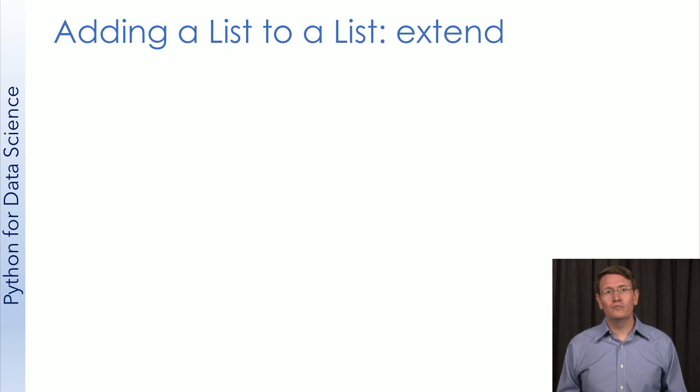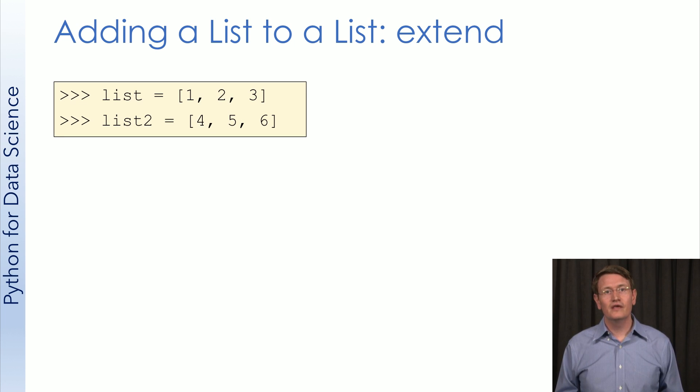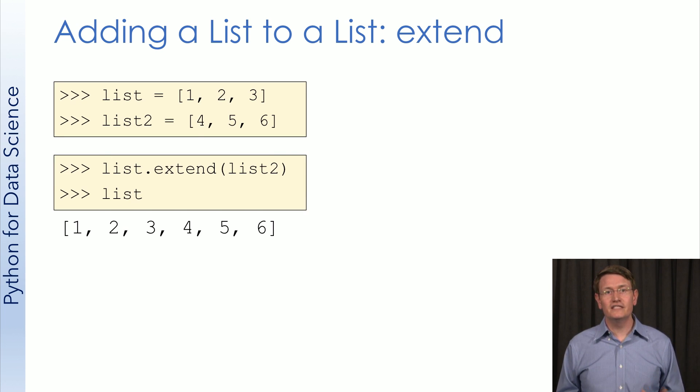Sometimes, you'll want to merge two lists. If the merger simply involves adding one list to the end of the other, you can use the method extends. Let's set up two lists. Now, let's call the extends method to make it so list 2 is added to the end of list 1. Great. This did just what we'd expect.